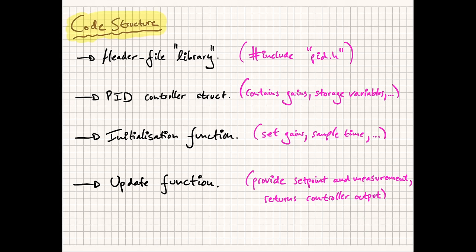Now we're almost ready to look at the final implementation in software, but let's loosely define the code structure first. I'm quite fond of single-header libraries, and they work well for embedded systems, so everything will be contained in one .h and one .c file, which we can simply include. We'll use a C struct to store controller gains, derivative low-pass filter time constants, output limits, and persistent memory variables. We'll only need two main functions: one to initialize the controller (setting gains, sample time, and so forth) and one to update the controller, passing in the setpoint and measurement and returning the controller output.